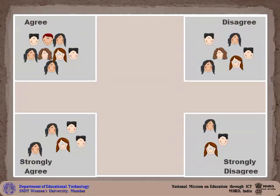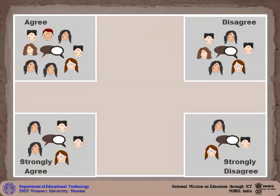The class now has students standing at four corners. There may be a lesser number of students at one corner than another. Mr. Bhosle now asks the students at each corner to discuss amongst themselves the reasons why they have chosen that particular option. They may come up with multiple reasons and justifications.